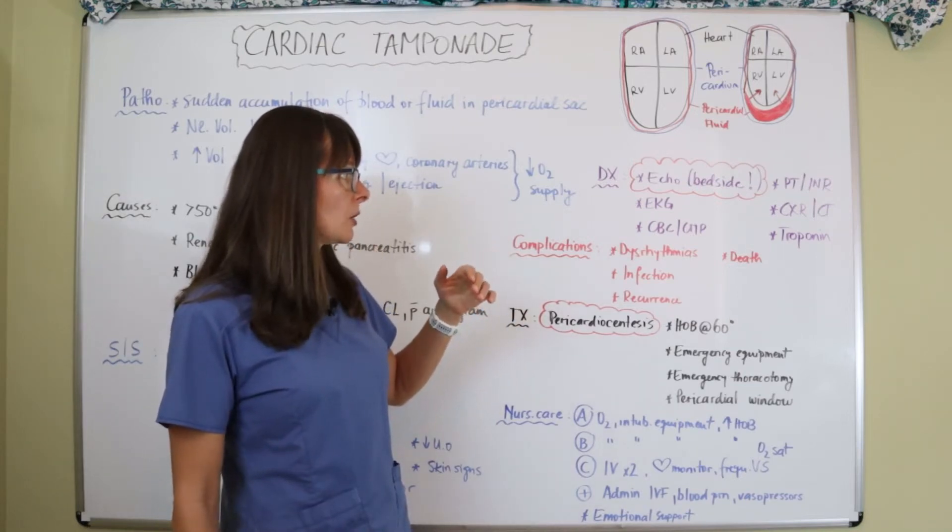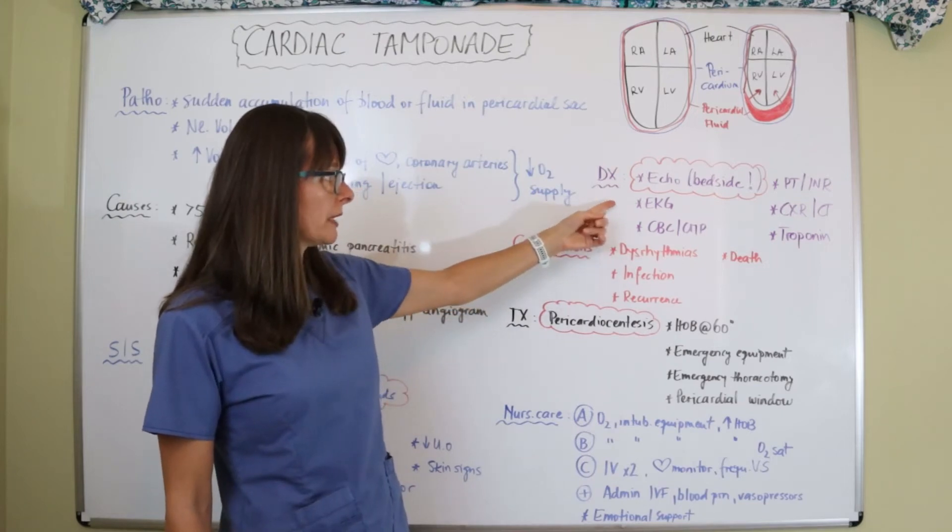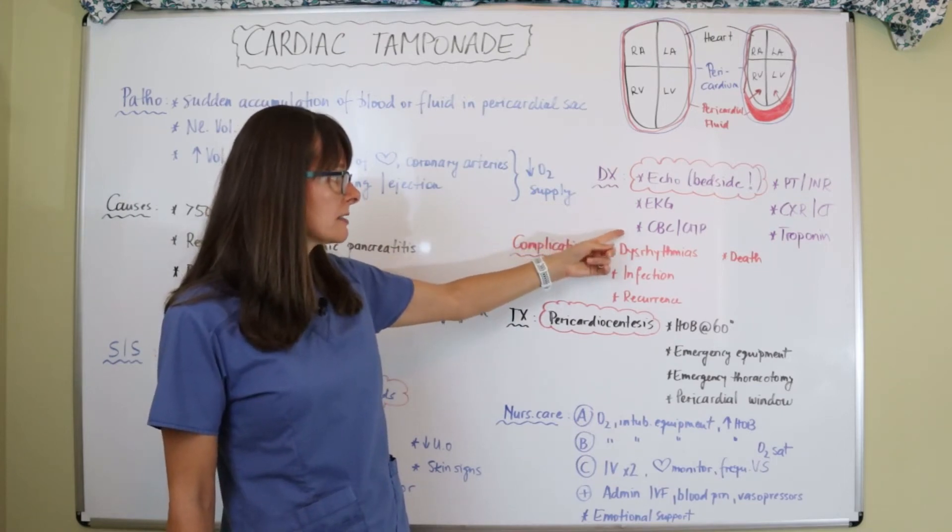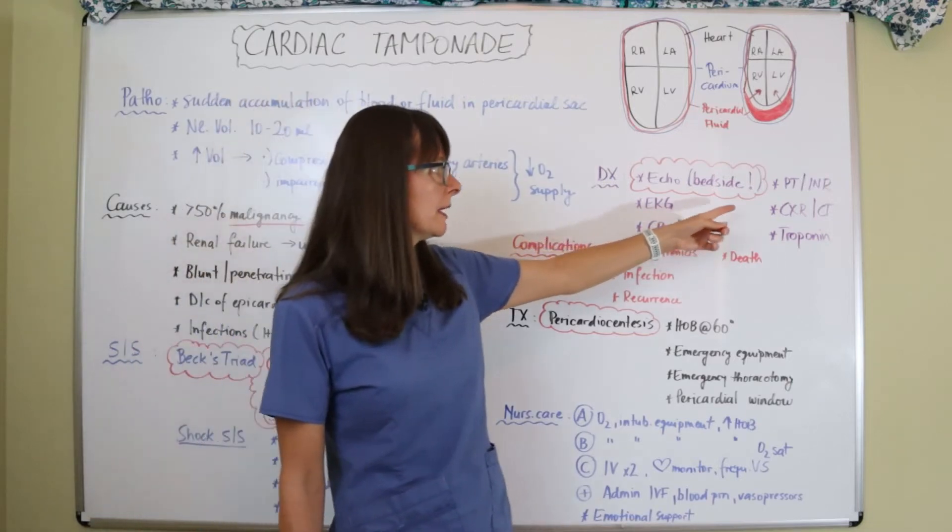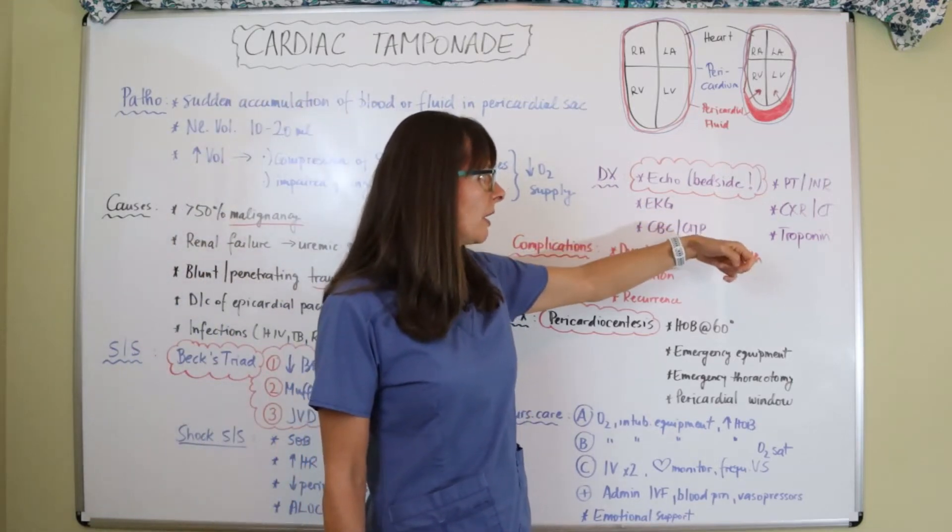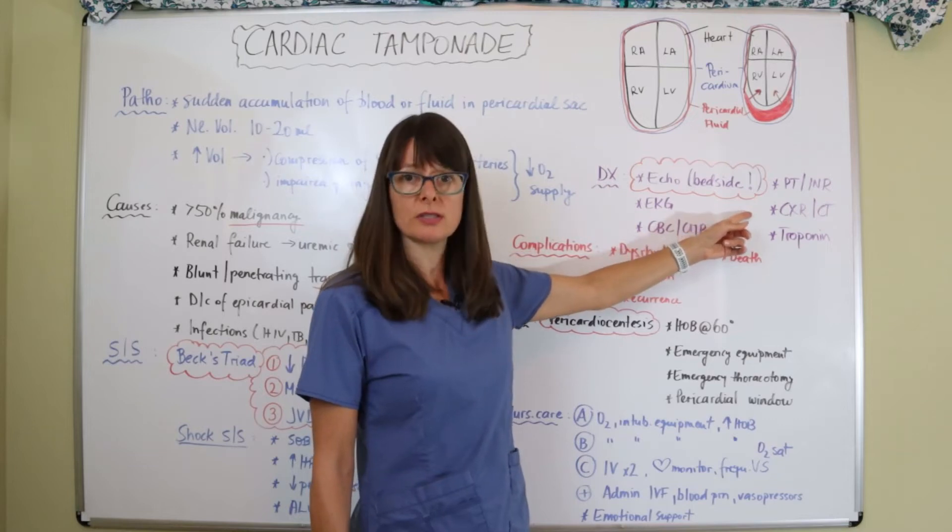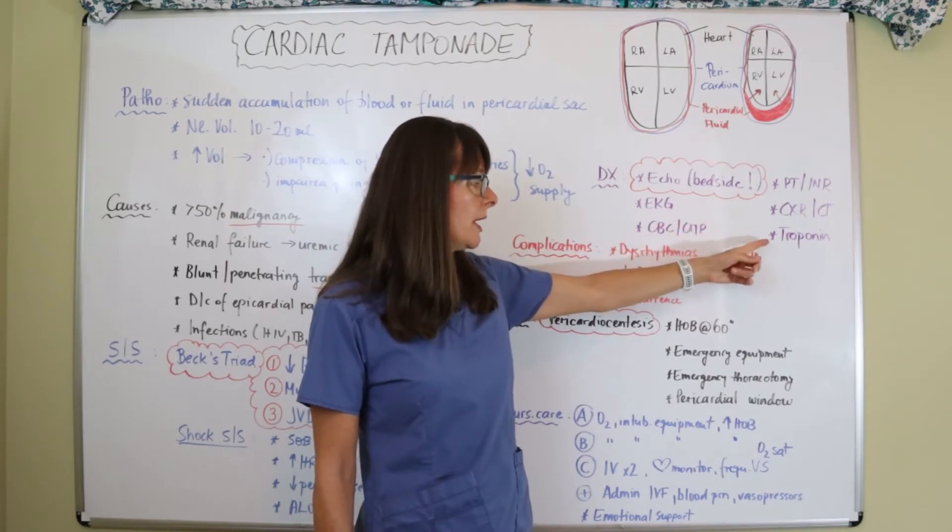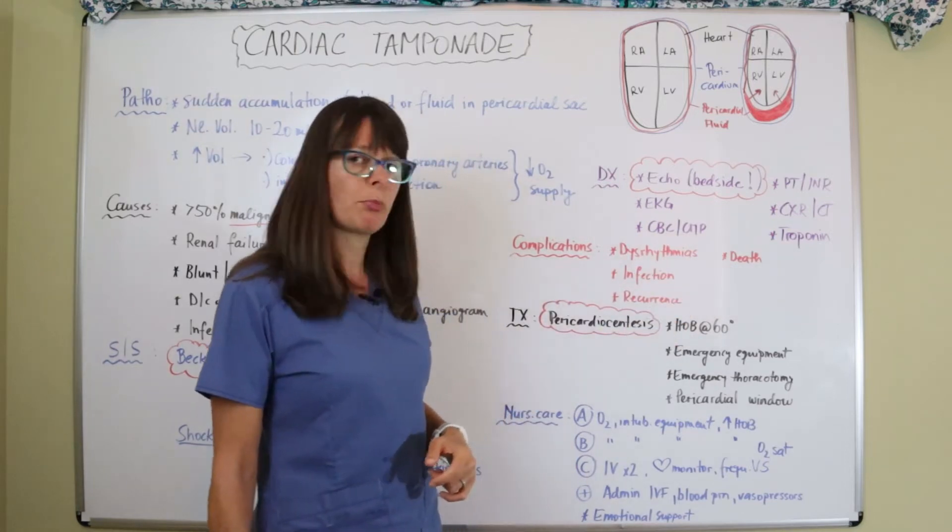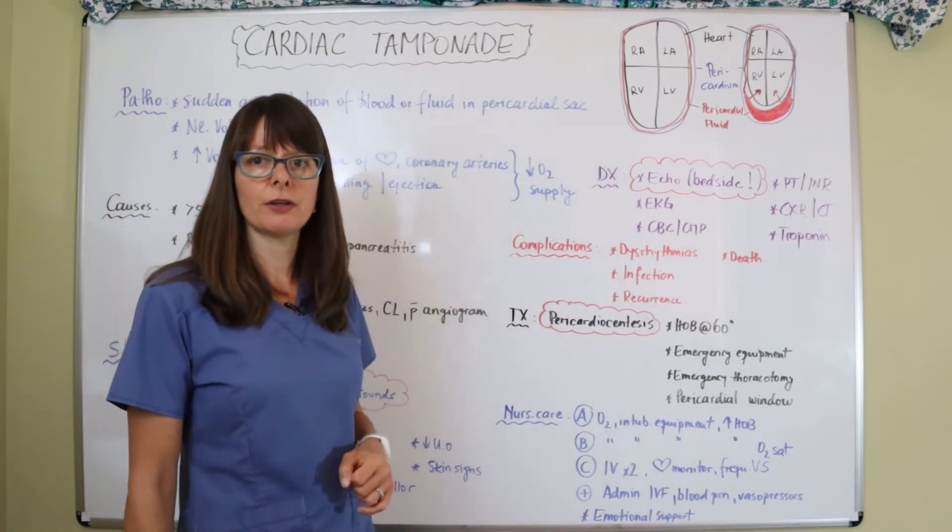Other tests are also indicated, which then of course are an EKG to look at the heart, CBC and CMP to take a look at basic labs along with bleeding studies, PT INR, as well as a chest x-ray or CT of the chest to take a look exactly as to what's going on. And then most certainly want to consider a troponin to rule out any kind of other acute coronary causes for the patient's presentation.